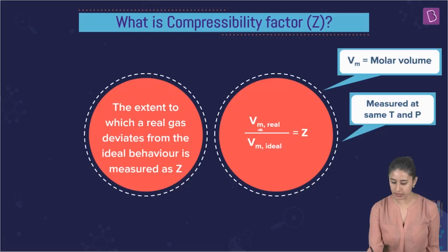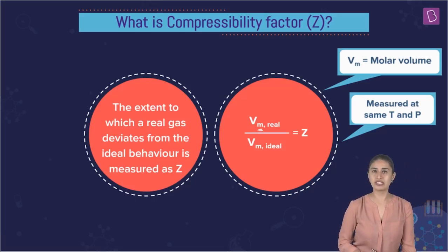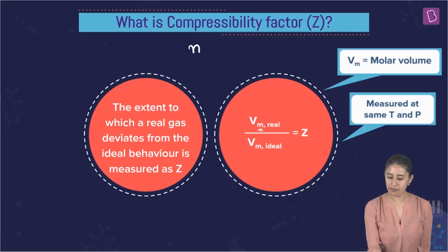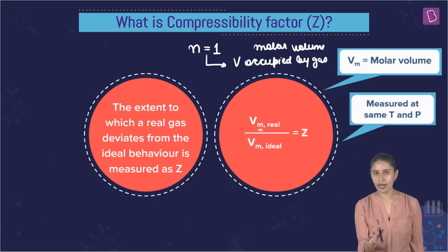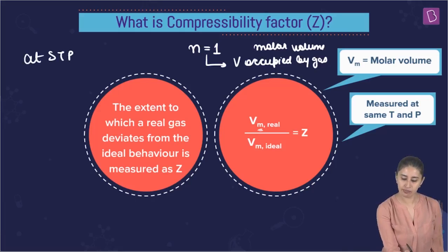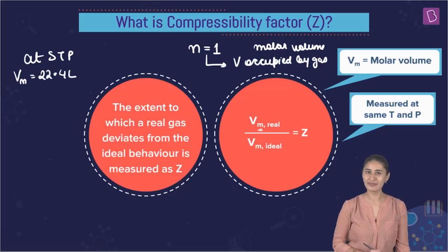Now, observe something very important. I have written the term VM. What is this? So you know that whenever we take moles equal to 1, volume occupied by the gas is called molar volume. So molar volume is the volume occupied by the gas when moles are equal to 1. You know that at STP, we take the molar volume, volume of 1 mole for gas as 22.4 liters. Some basic concepts of chemistry.